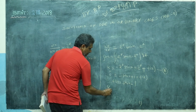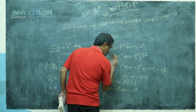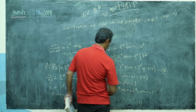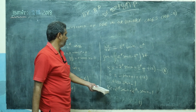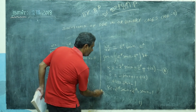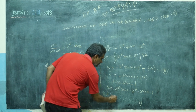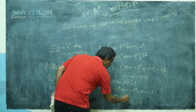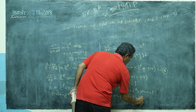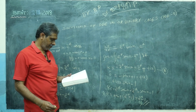Substituting f(x) back: u = −e^(−t)·sin x + e^(−t) + sin x − 1. You can simplify by factoring: u = sin x·(1 − e^(−t)) + (e^(−t) − 1). This is the solution. If you differentiate twice with respect to t, you will come back to the original equation.